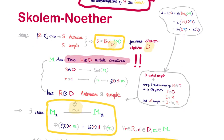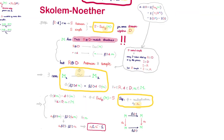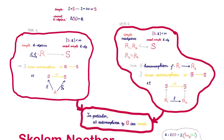Since R⊗D is simple and finite dimensional over k, the two R⊗D-module structures induced on M via f1 and f2 must be isomorphic. That isomorphism commutes with D, so it must correspond to some element in S. Thus we can obtain f2 by conjugating f1 by some element of S. In particular, we have shown that all automorphisms of a central simple k-algebra are inner.